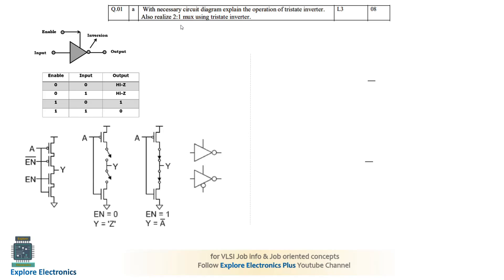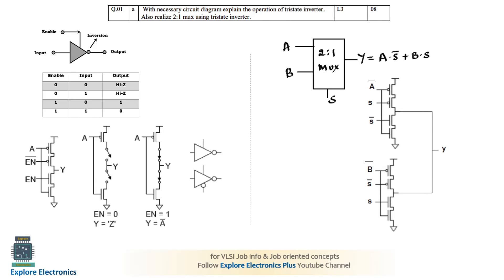Now for the second part: realizing a 2-to-1 mux using tri-state inverters. The 2-to-1 mux has two inputs A and B and a single select line S. When S = 0, A is selected as output; when S = 1, B is the output. The expression is Y = A·S̄ + B·S.